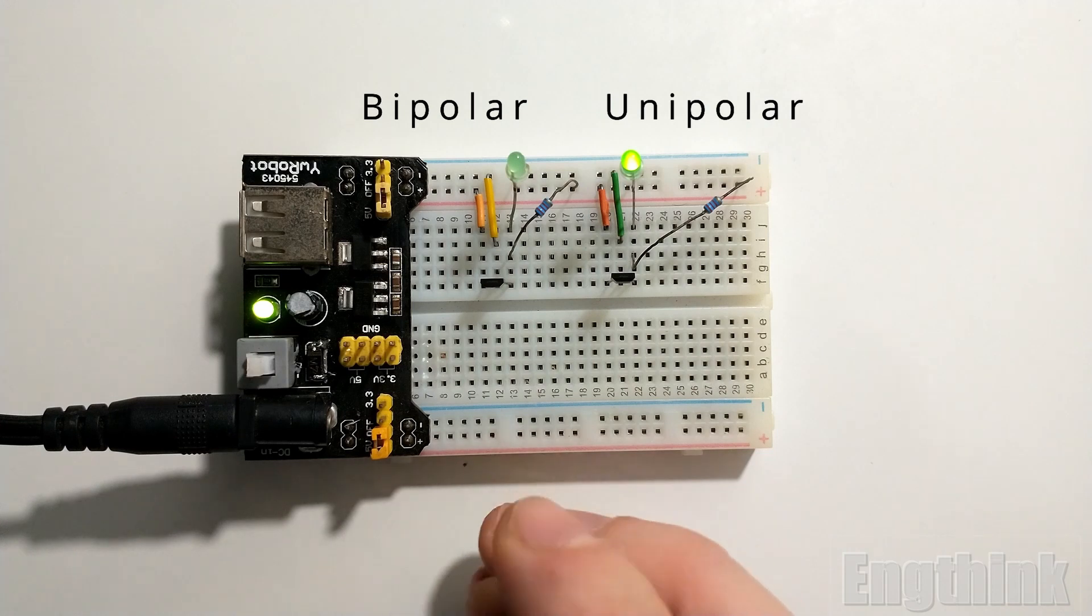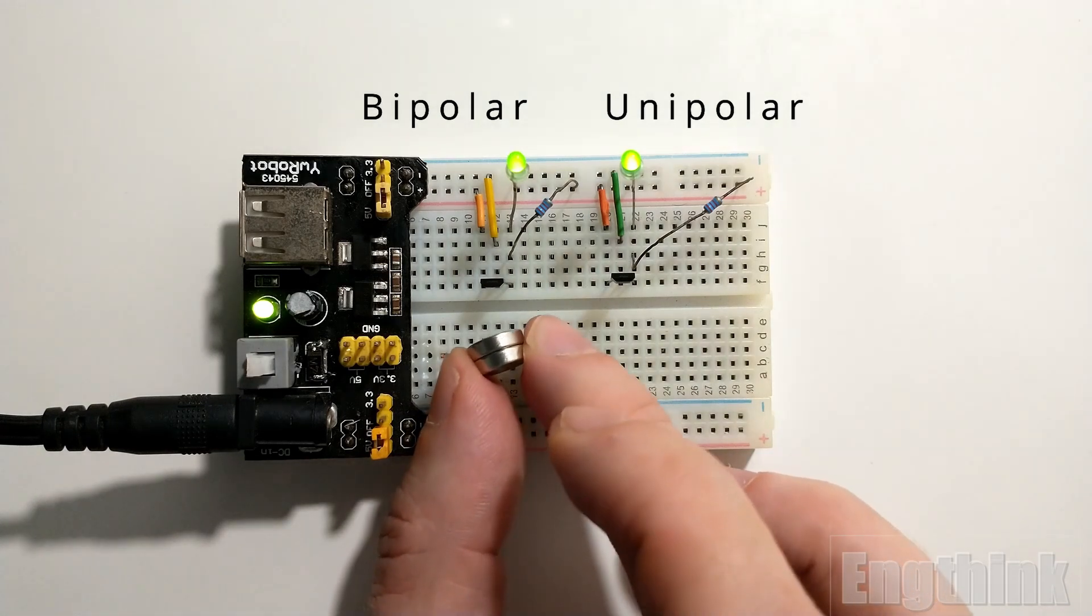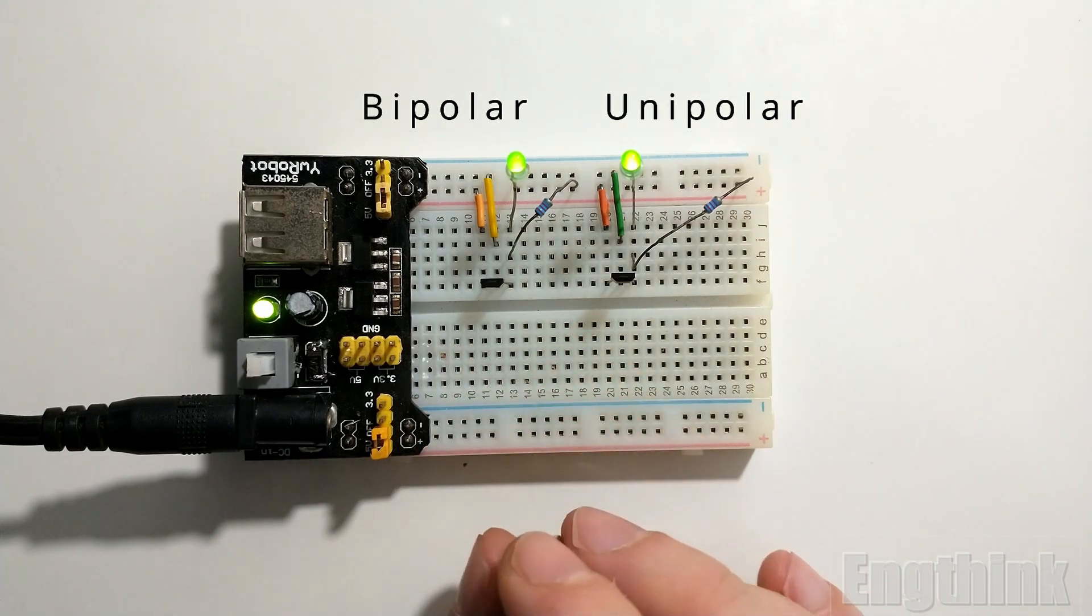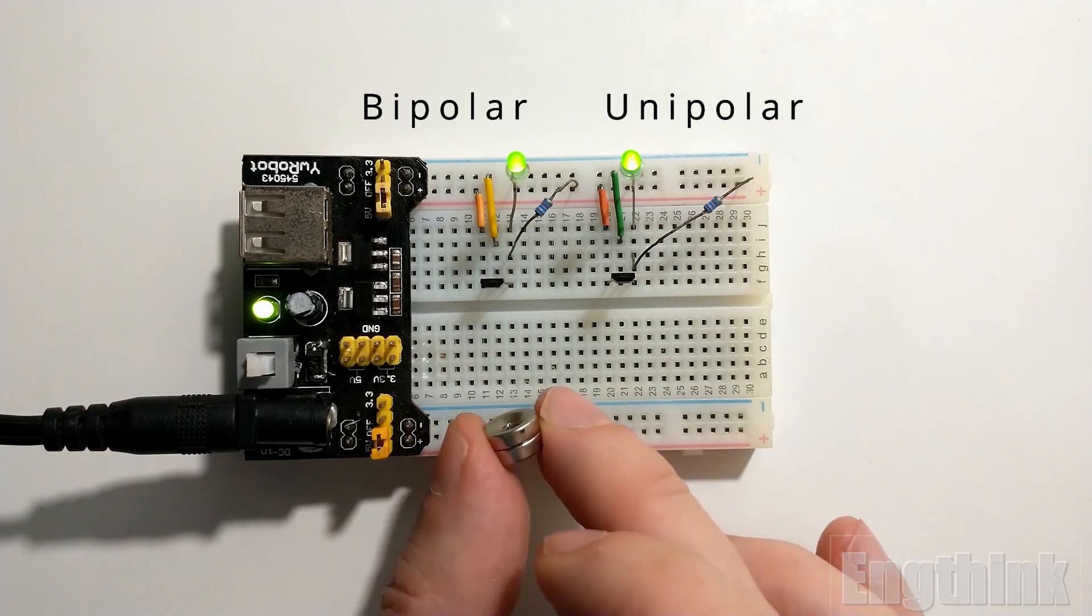If we don't have any magnetic field near the Hall effect sensor, it keeps the last state of the output. Summarizing before I finish the video: